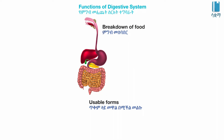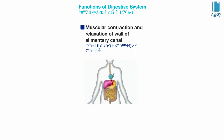How does food move through the digestive system? It is because of the muscular contraction and relaxation of the alimentary canal.